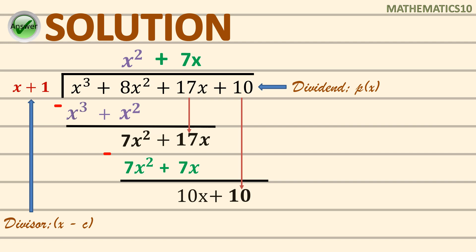Repeat the process: divide 10x by x, which gives 10. Next, multiply 10 with x + 1 to get 10x + 10. Then subtract: 10x minus 10x is 0, and 10 minus 10 equals 0.